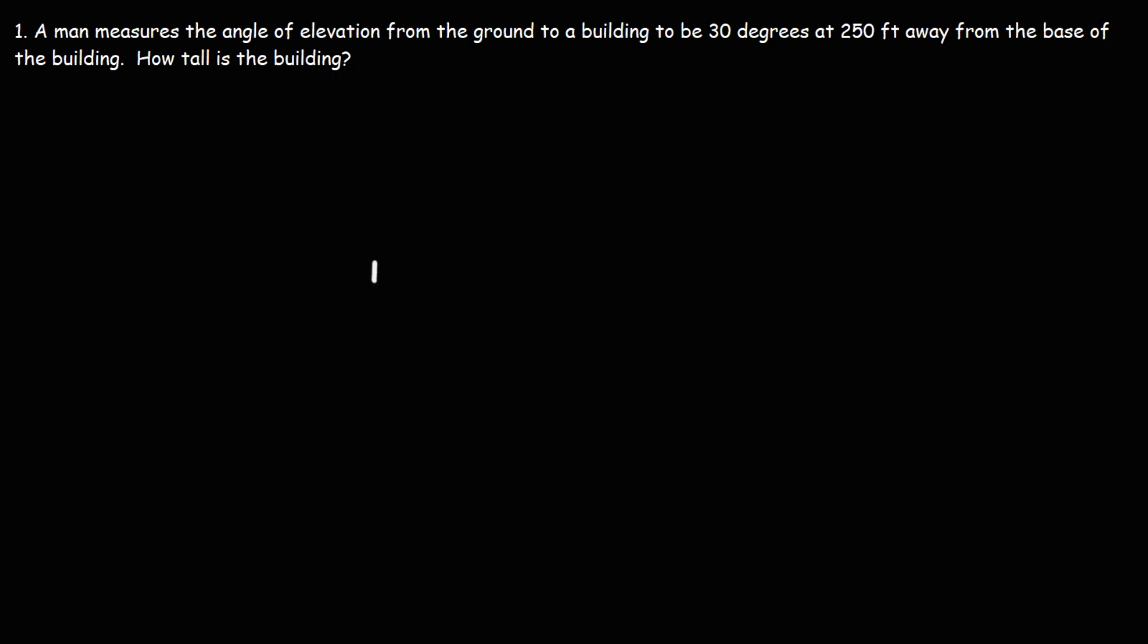So let's say this is the building and this is the ground. The person measures the angle of elevation from the ground to the top of the building, and this angle is 30 degrees.